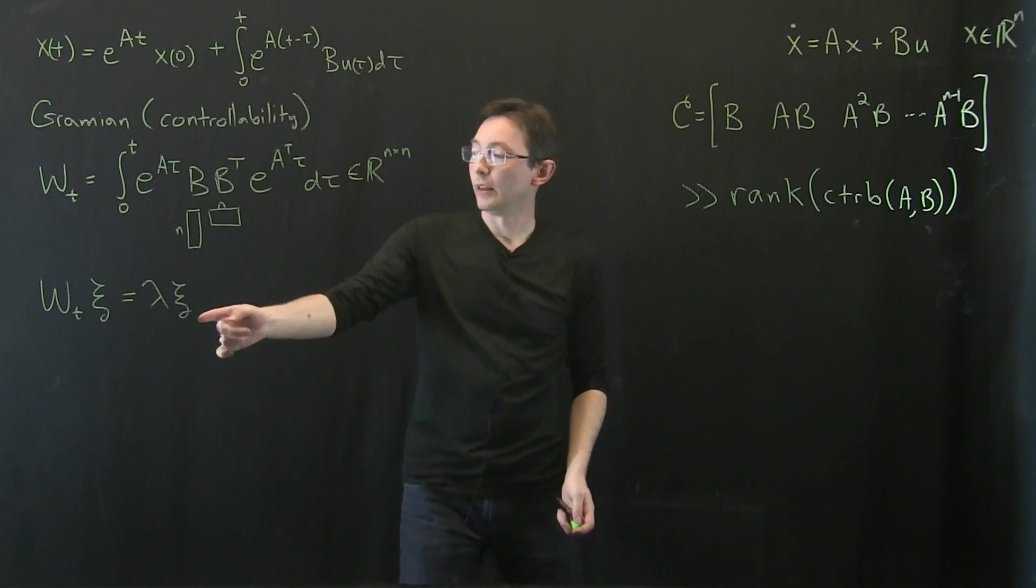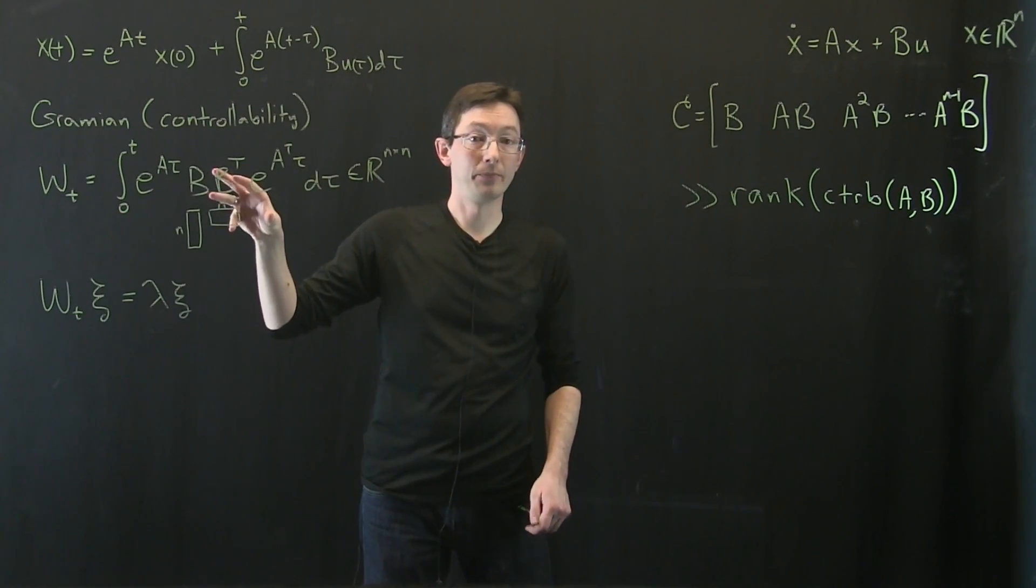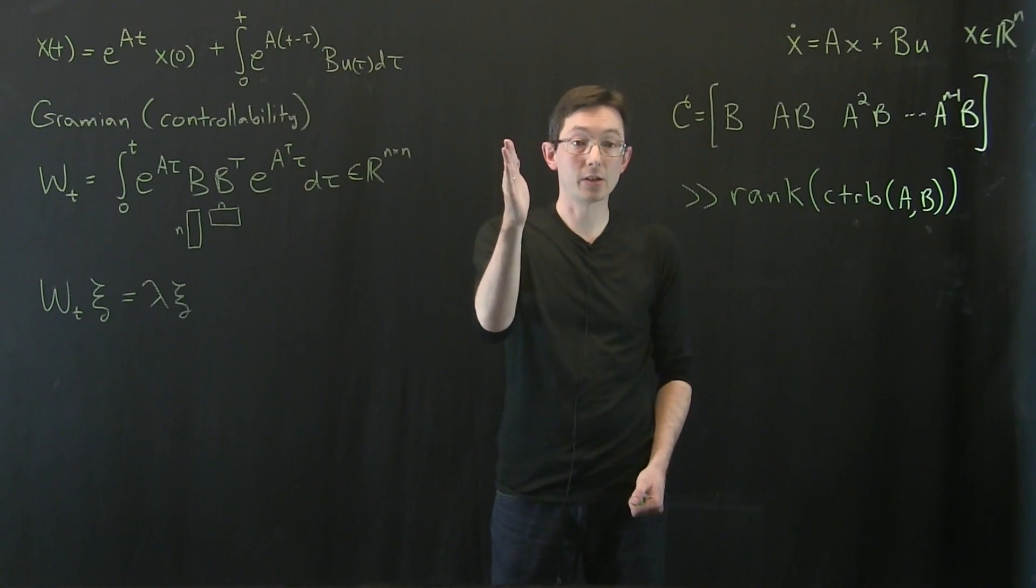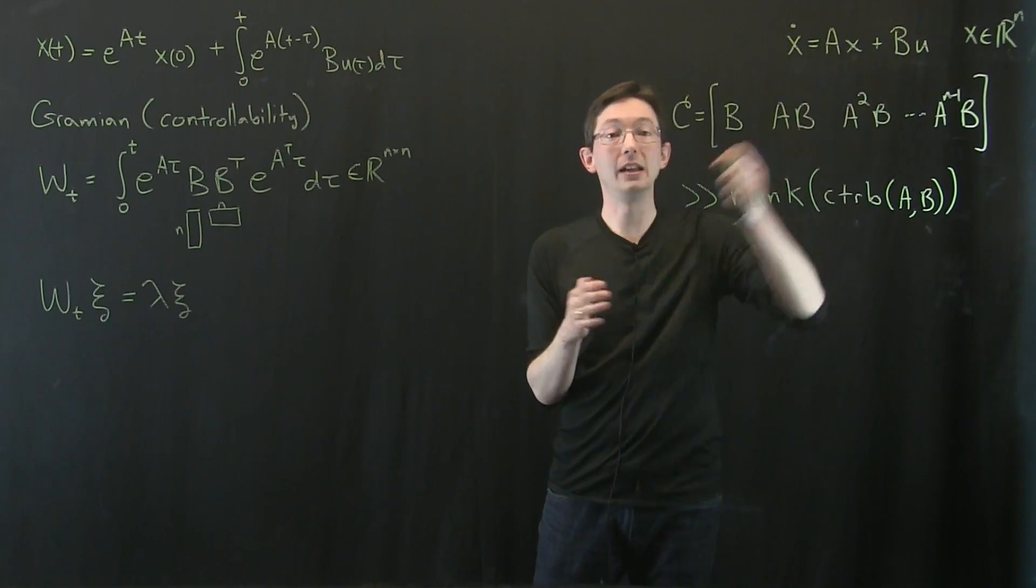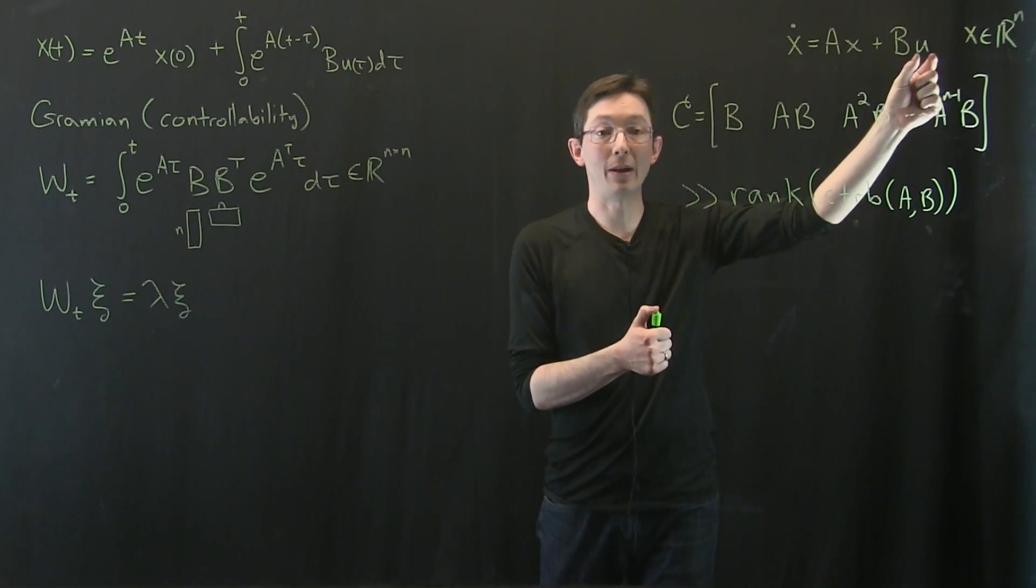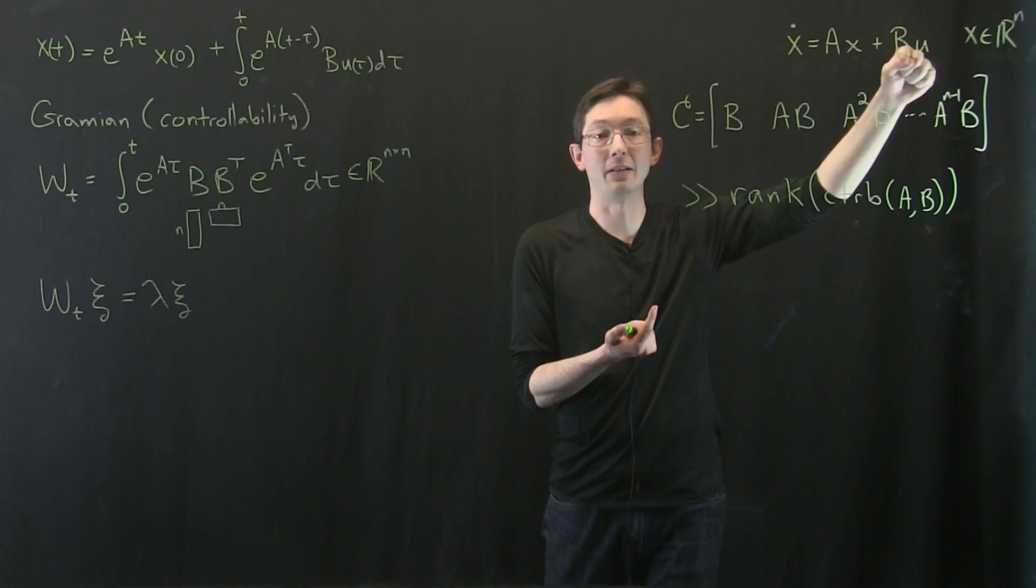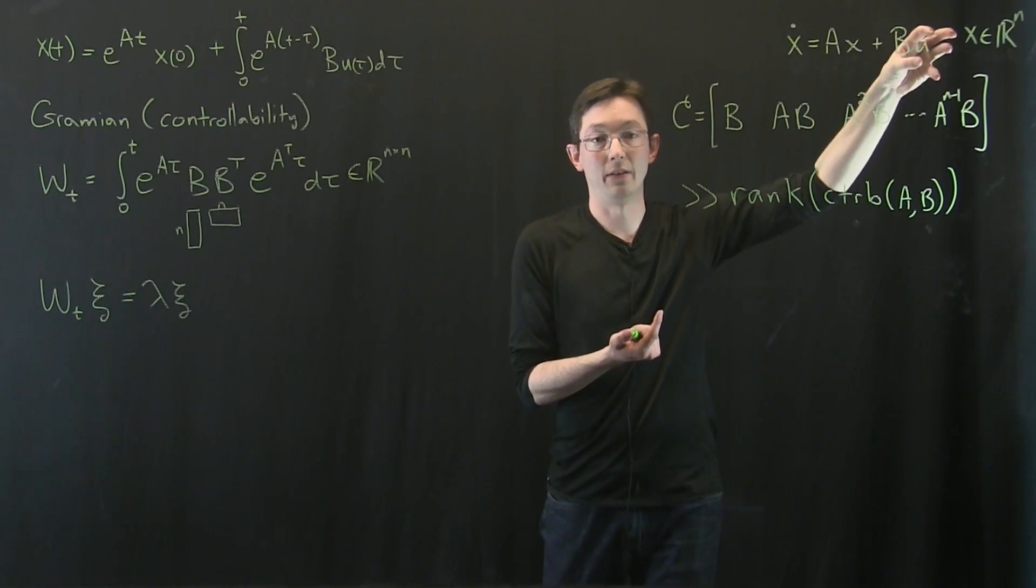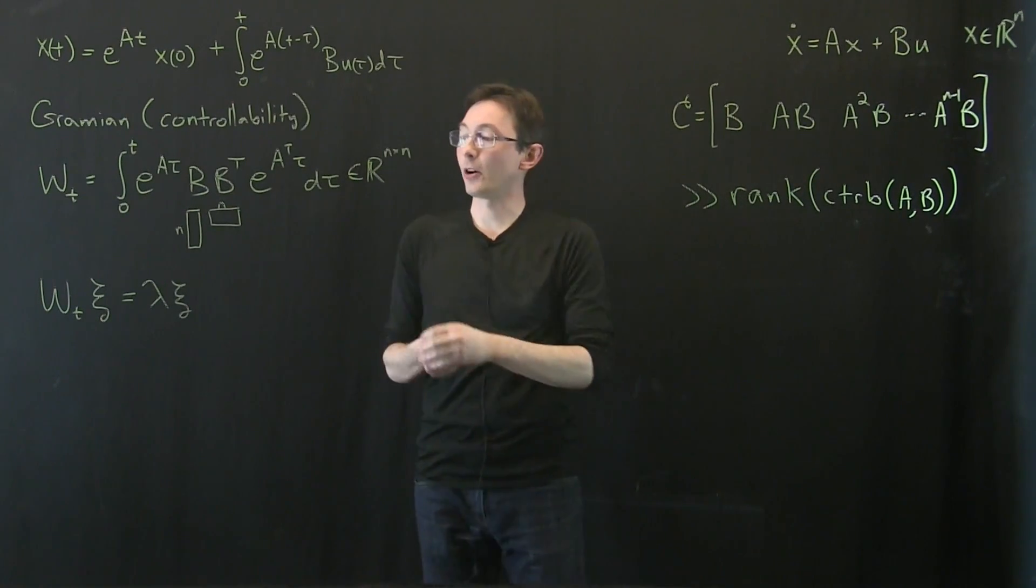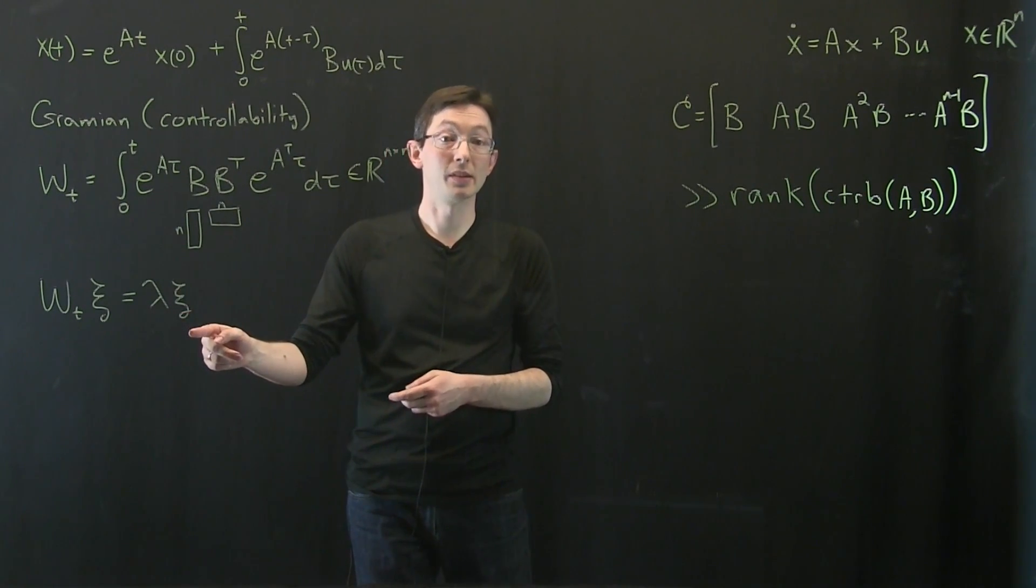And the eigenvectors corresponding to the biggest eigenvalues are the most controllable directions in state space. Let me say that again. The eigenvectors of this Gramian that have the biggest eigenvalue are the most controllable directions in state space, meaning I can go farther in those directions on the same amount of input energy.